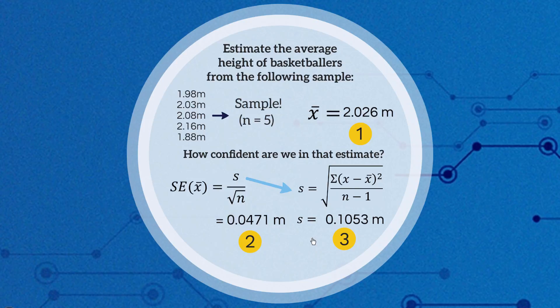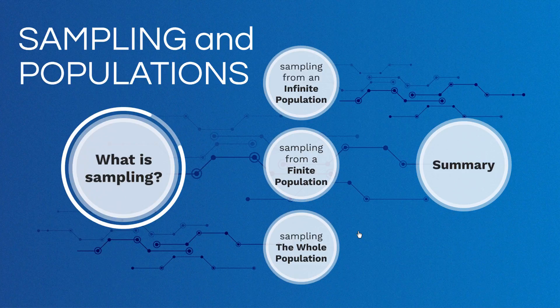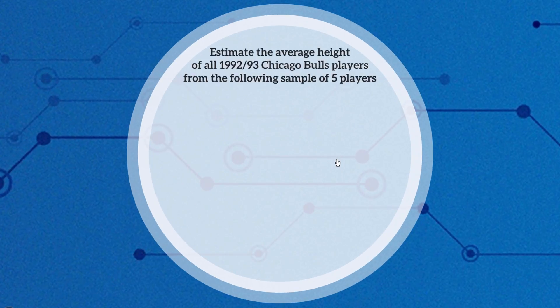Now let's compare this to sampling from a finite population. As I mentioned, this is uncommon in practice because if there's a finite population, you'll probably have the whole population in your sample anyway. But it's a useful stepping stone that ties the infinite population scenario and the whole-population scenario together.